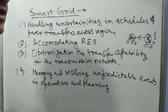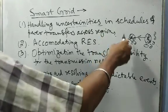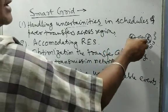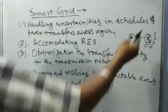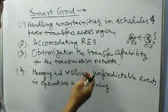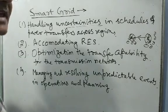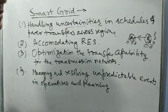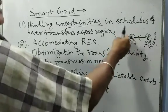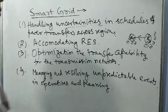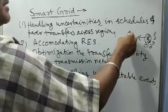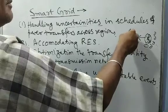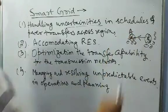Regarding accommodating renewable energy sources: suppose the power rate is higher in one region, so importing power from another place will cost more. If that region has, say, 10 megawatts of renewable energy sources, that energy can be provided by Region A itself, avoiding the costly import.